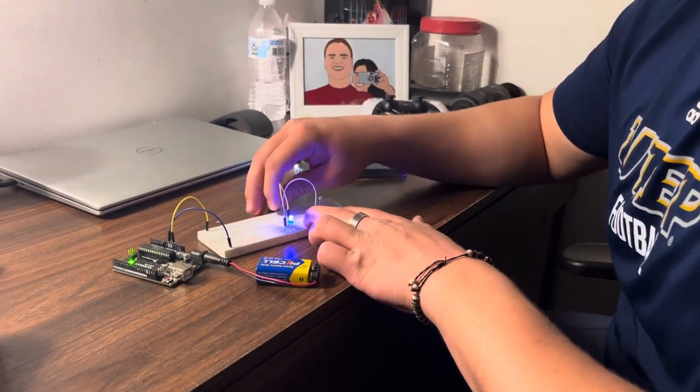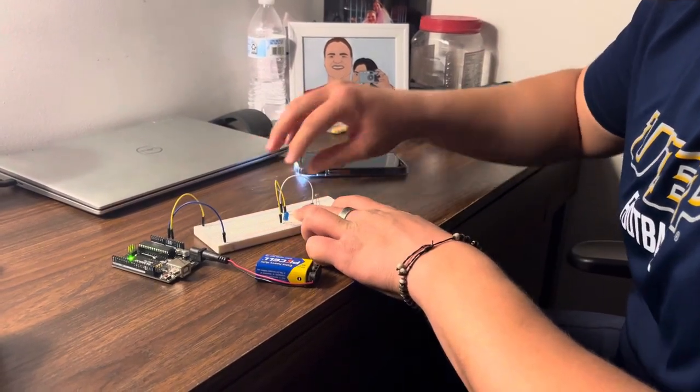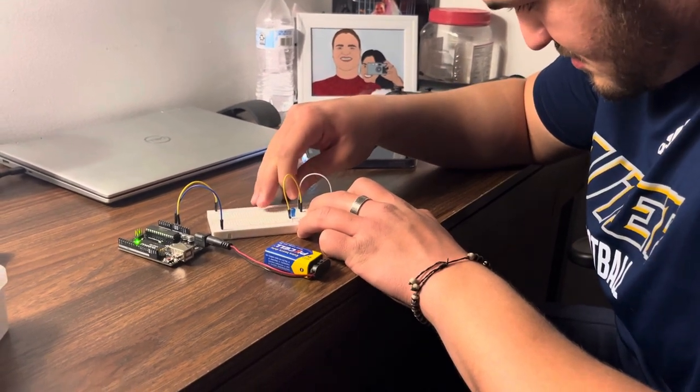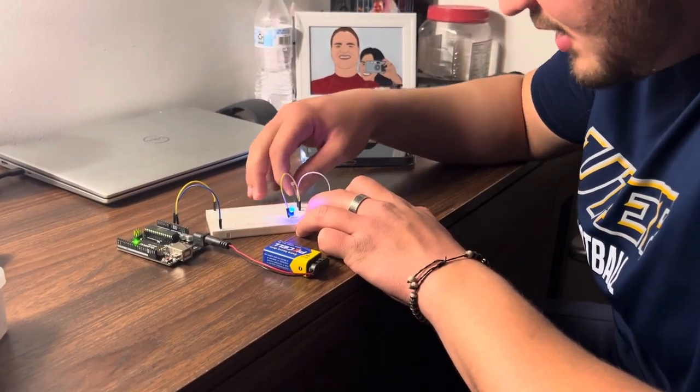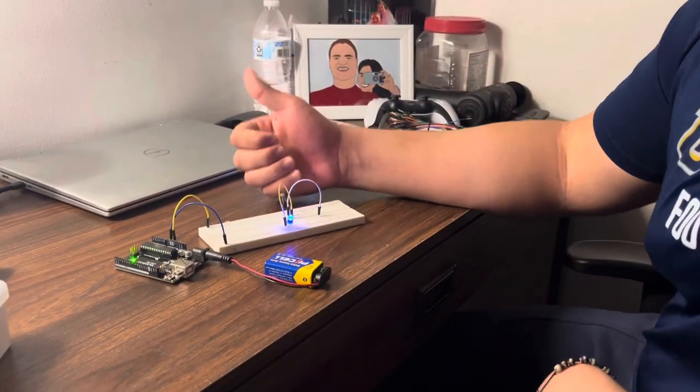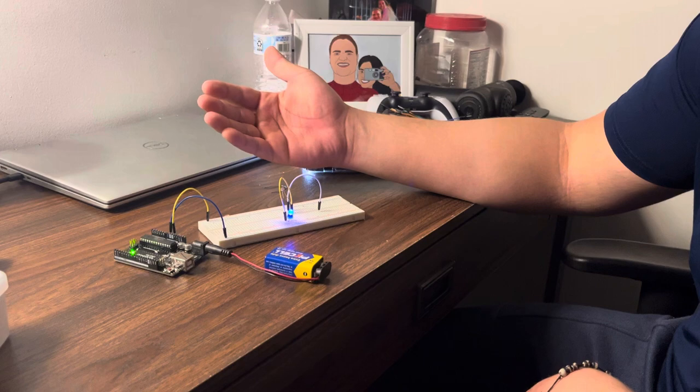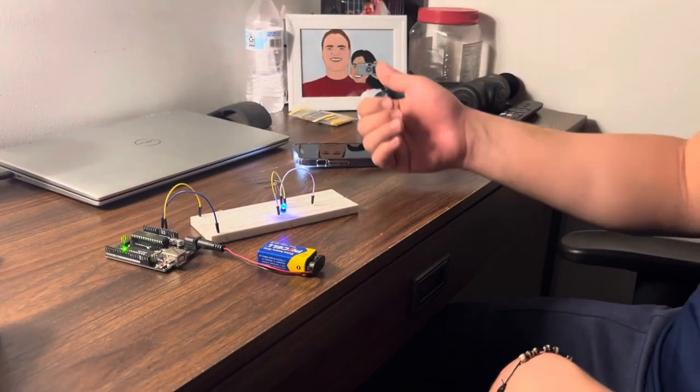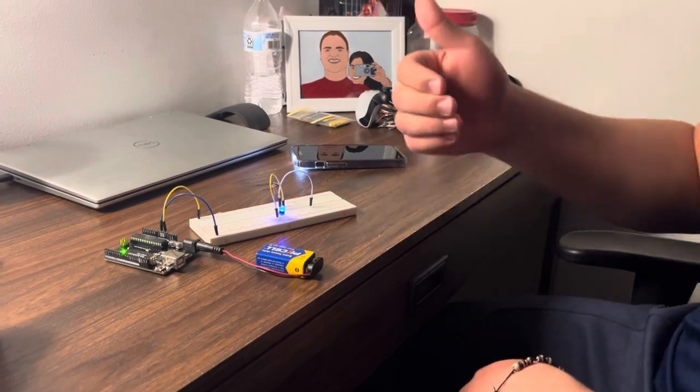But if we were to change these two resistors, the photosensor will work in the way that it was originally meant to work, as in where there's more light, there's less resistance. If there's less light, there's more resistance.